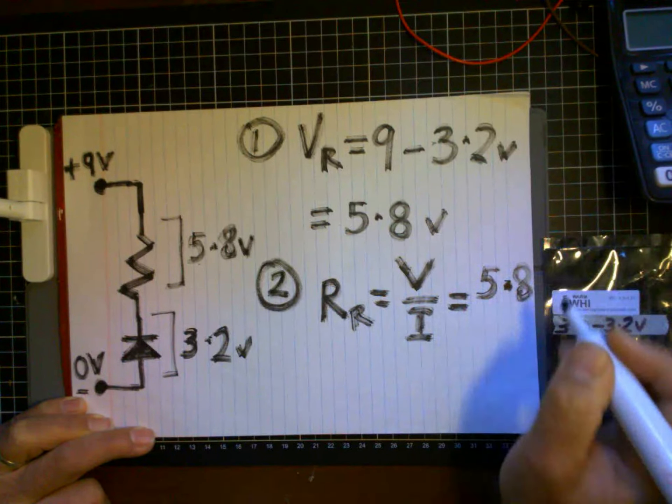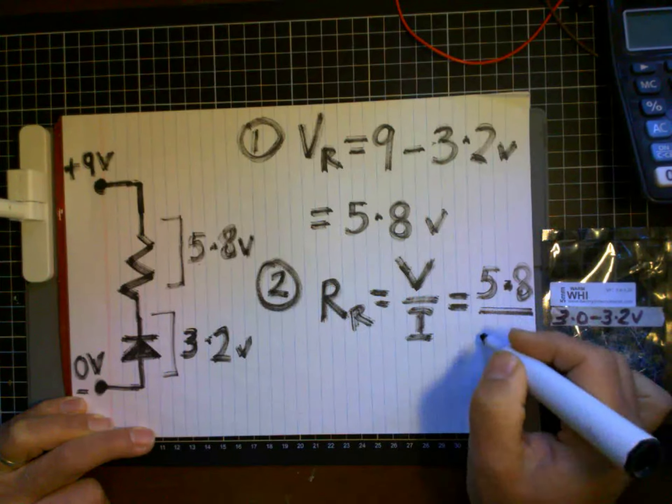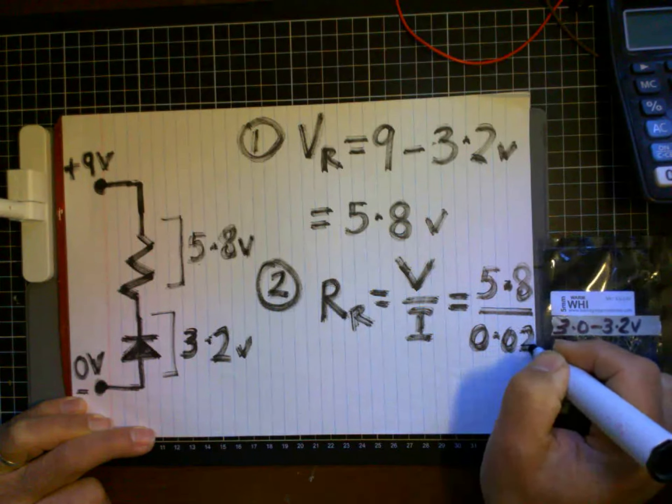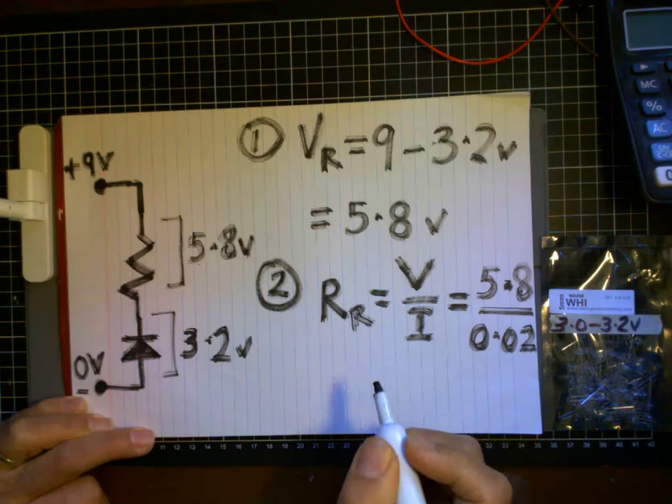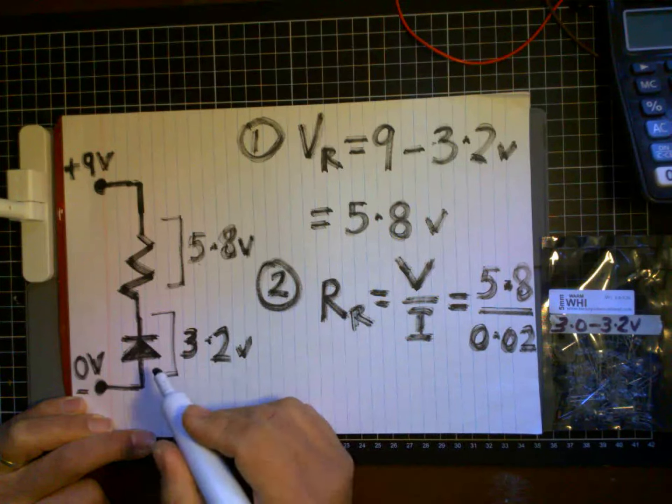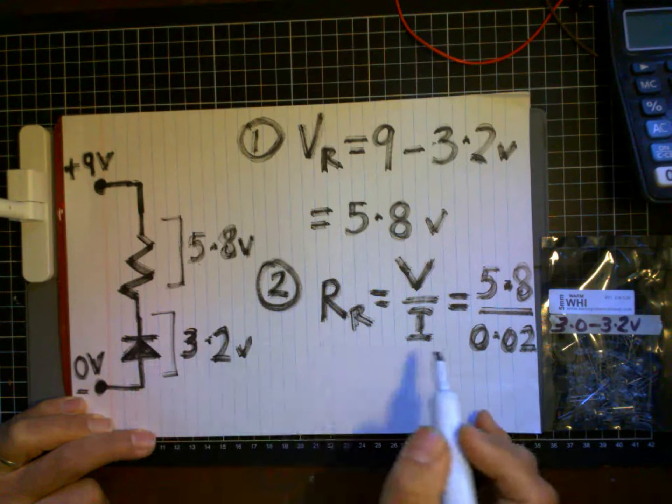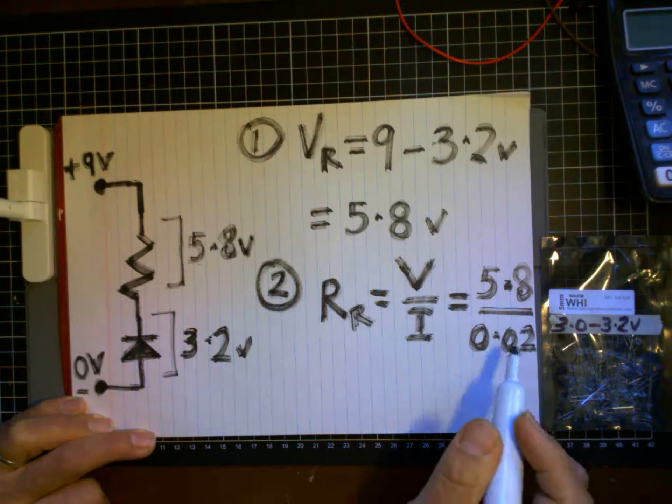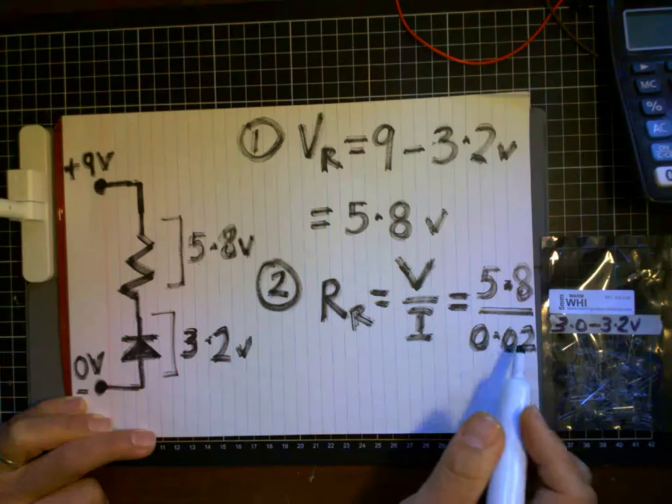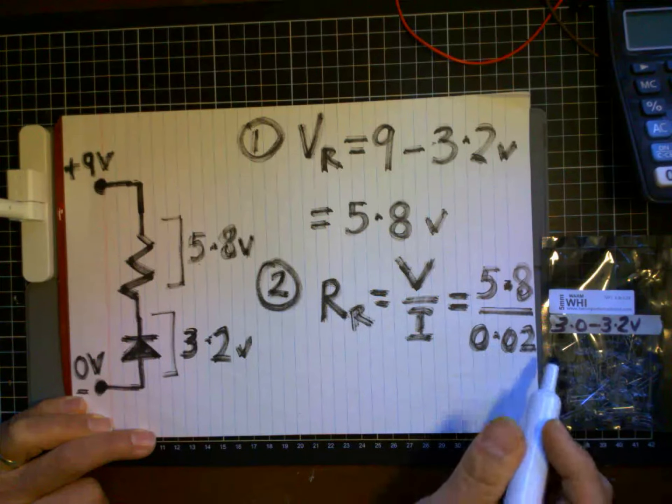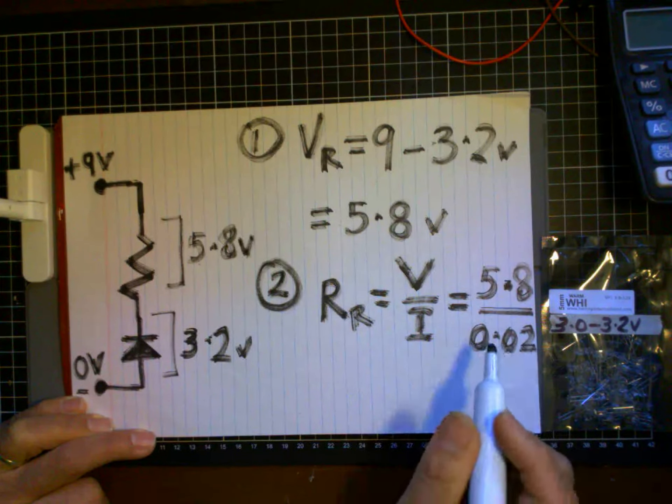...divided by 0.02 amps. Remember, 20 milliamps is the optimal current for these LEDs. Therefore, when you convert 20 milliamps into amps, you divide by a thousand and get 0.02.